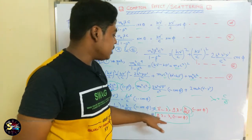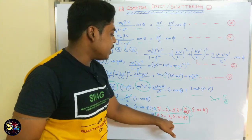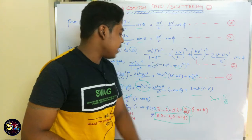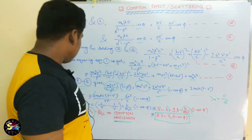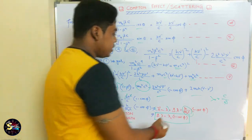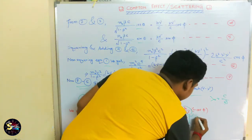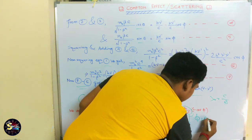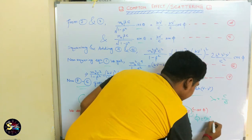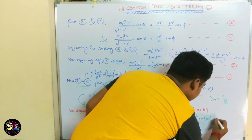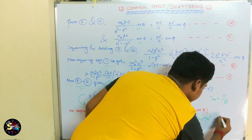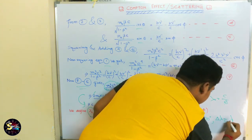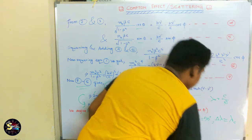We can see that delta lambda equals lambda_c times (1 minus cos phi). For the special case phi equals 90 degrees, delta lambda equals lambda_c, which is the Compton wavelength.